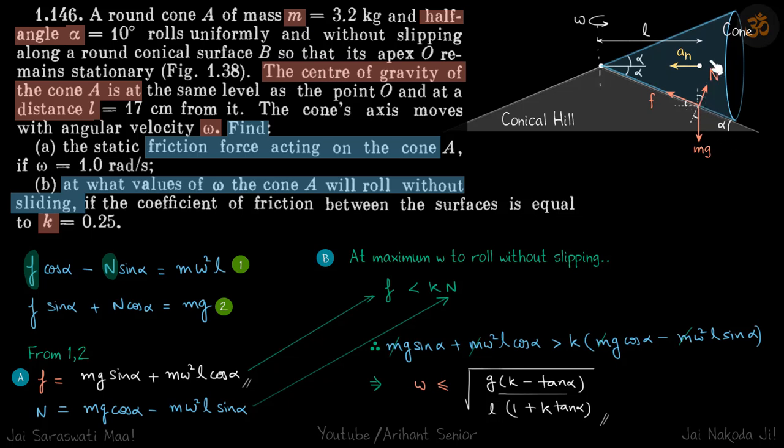So now let's write F equals M a in horizontal direction. That will be F cos alpha minus N sin alpha equals M omega square L, our first equation. In vertical direction we have N cos alpha plus F sin alpha equals mg. So we have two equations and our variables are friction and normal reaction. Solving that we will get the value of friction and normal reaction.